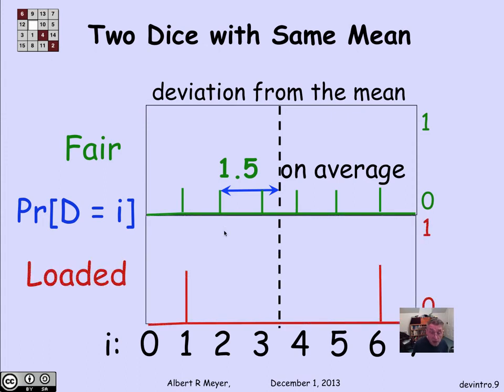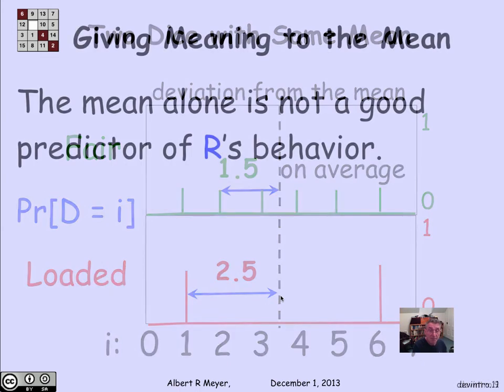On the other hand, for the loaded die, as we said, it's always exactly 2 and 1 half from its expected value, which means its expected value is also 2 and 1 half. So we can start to see the difference between these two distributions and these two kinds of die by even though they have the same expectation, one of them is more likely and has a greater expected distance from its mean.